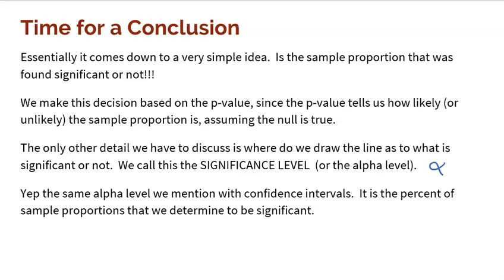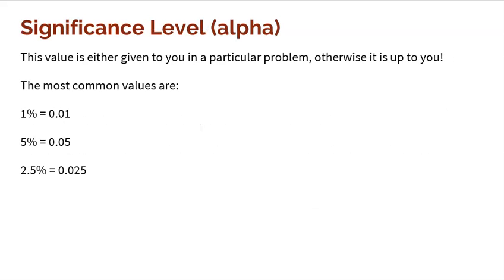We usually use 1%, but it's very common to use 1%, 5%, or even 2.5%. Some people even use 10% as significant, though that's kind of high. The most common levels are 1% or 5%. What we're saying is that 1% of samples are significant — are we one of them? Or 5% of samples are significant — are we one of those?